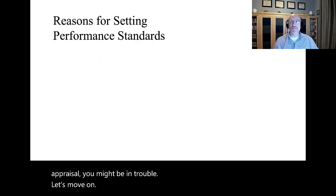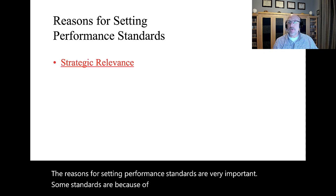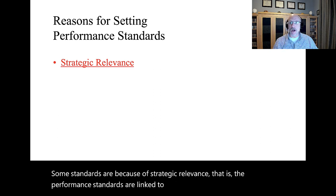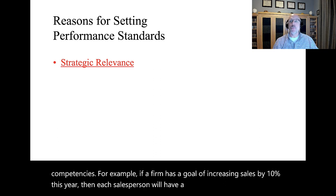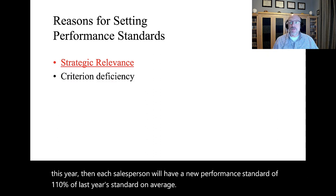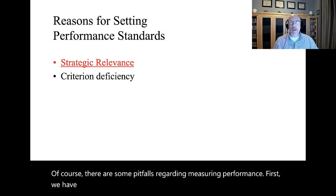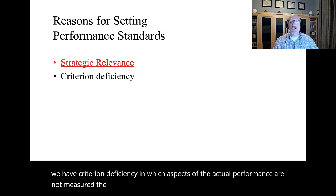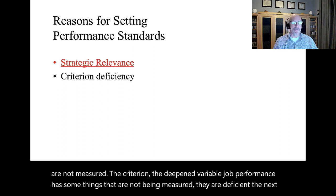The reasons for setting performance standards are very important. Some standards are because of strategic relevance — that is, the performance standards are linked to organizational goals and competencies. For example, if a firm has a goal of increasing sales by 10% this year, then each salesperson will have a new performance standard of 110% of last year's standard, on average. There are also pitfalls regarding measuring performance. First, we have criterion deficiency, in which aspects of the actual performance are not measured — the criterion, the dependent variable, job performance, has some things that are not being measured.